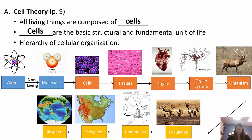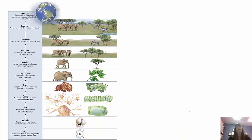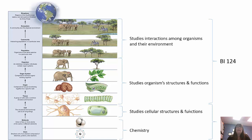It all starts with atoms and molecules. Those are non-living things, but atoms combine to form molecules and molecules form cells — they're part of cells but not actually living. Chemistry covers molecules and atoms. Then we move to the cell and study cellular structures and functions. We also study organism structure and functions and the interactions among organisms and their environment, which is known as ecology.